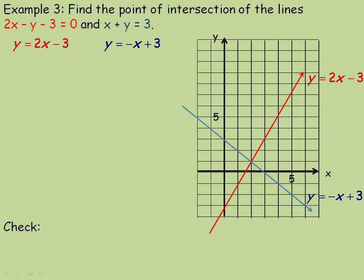So that's graphing using slope y-intercept form. Another way to graph them — and we'll get to the point of intersection in a moment — is to use intercepts. The intercepts occur where the other variable equals 0. For example, on the y-axis, the y-intercept is at 3, and notice that where y equals 3, x is 0. So if I substitute 0 in place of x and solve for y, I'll get y equals 3.